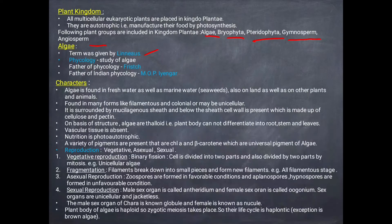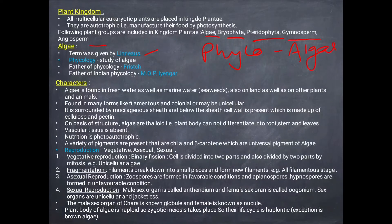The term 'algae' was given by Linnaeus. The study of algae is called phycology — 'phyco' means algae and 'logy' means study. The father of phycology was Fritsch and the father of Indian phycology was M.O.P. Iyengar.